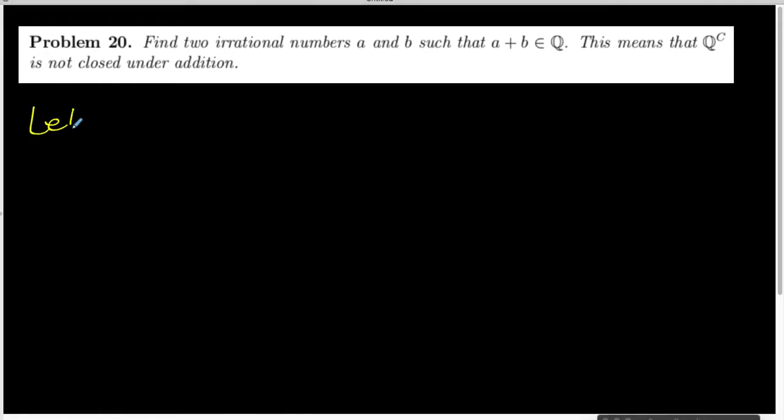So I am going to let A be something like 3 plus the square root of 2. And I already know that the square root of 2 is irrational and 3 is rational. So by a previous problem, we know that this is indeed an irrational number.